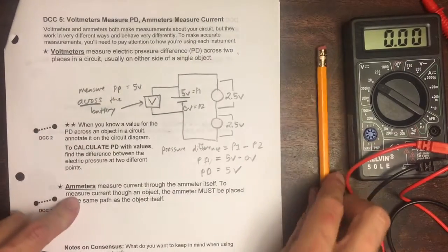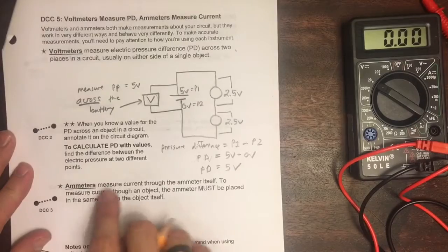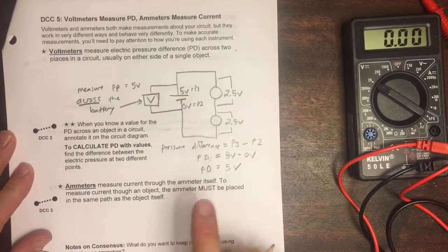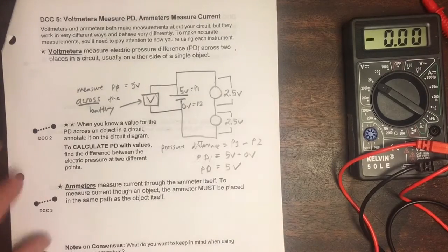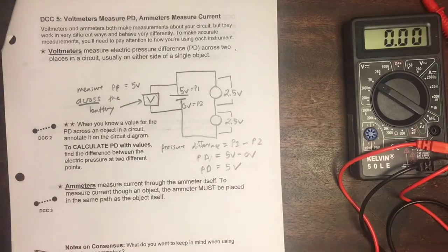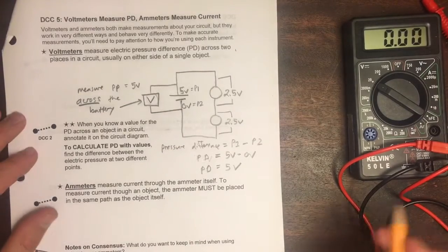Okay, let's go on and talk about ammeters. Ammeters measure current through the ammeter itself. To measure current through an object, the ammeter must be placed in the same path as the object itself. I'm going to draw a circuit diagram of this, and then we're going to see what it looks like with a real ammeter.